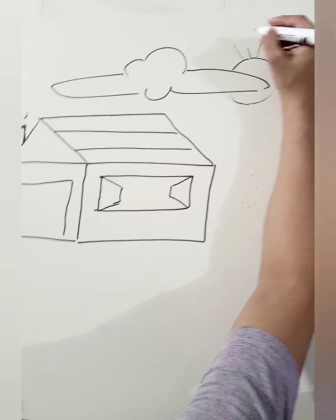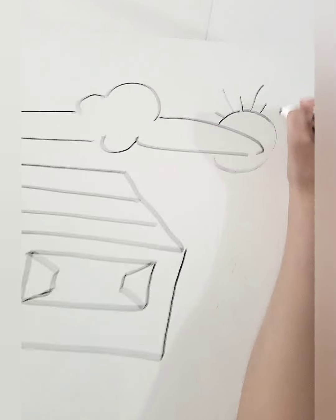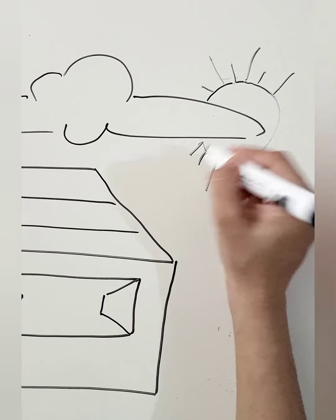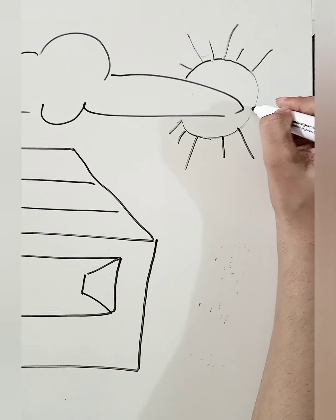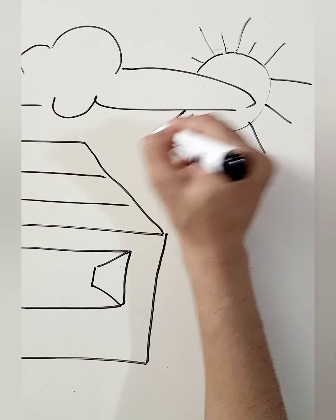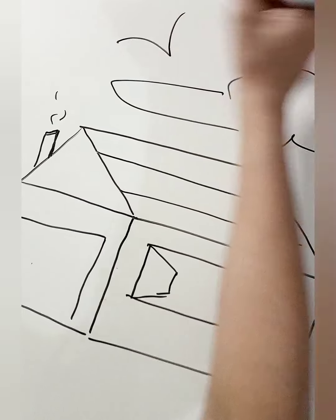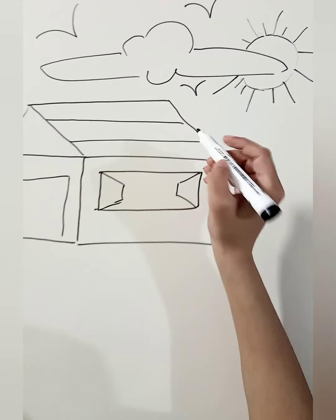Or you can make a full circle and just erase the part in the cloud. Make the lines for sunshine like this. Now draw these to show the birds.